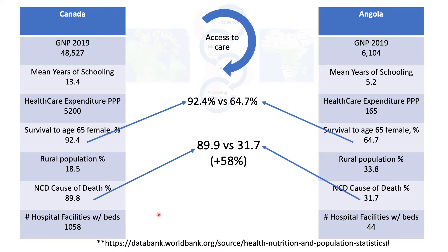Another telling statistic is that non-communicable disease causes of death in Canada is roughly 90% versus 31.7% in Angola. These include cardiovascular disease, cancer, and diabetes. And a very interesting — and quite difficult to find — statistic is the number of hospital facilities with beds: roughly 1,000 in Canada versus 44 for a country with the same population.